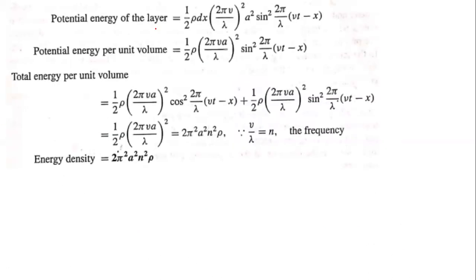Potential energy of the layer: half into rho into delta x, 2πv/λ squared, a squared, sin squared 2π/λ into vt minus x. So that is the potential energy.